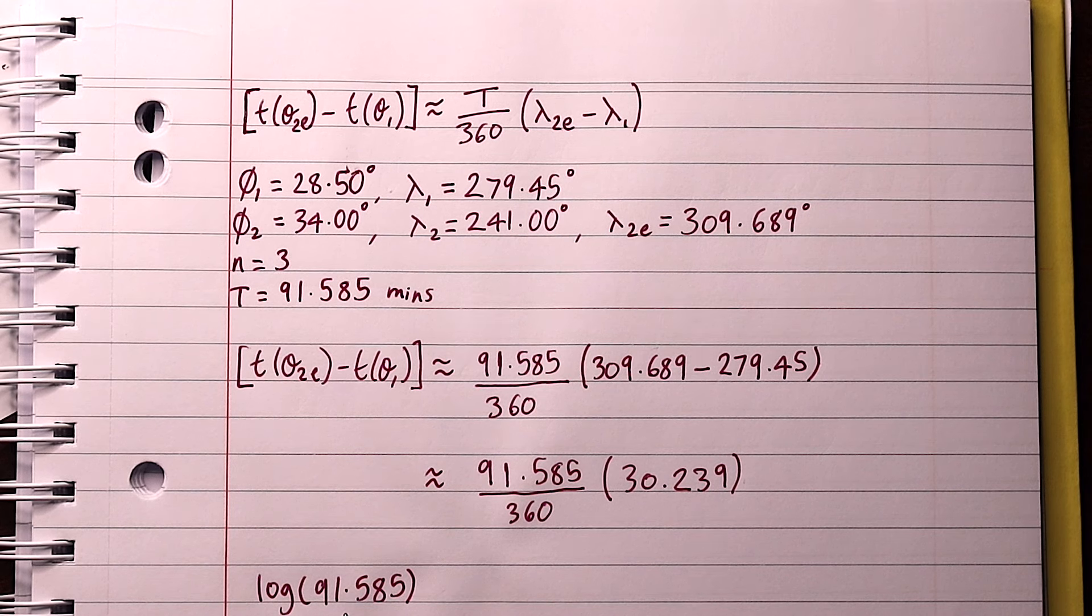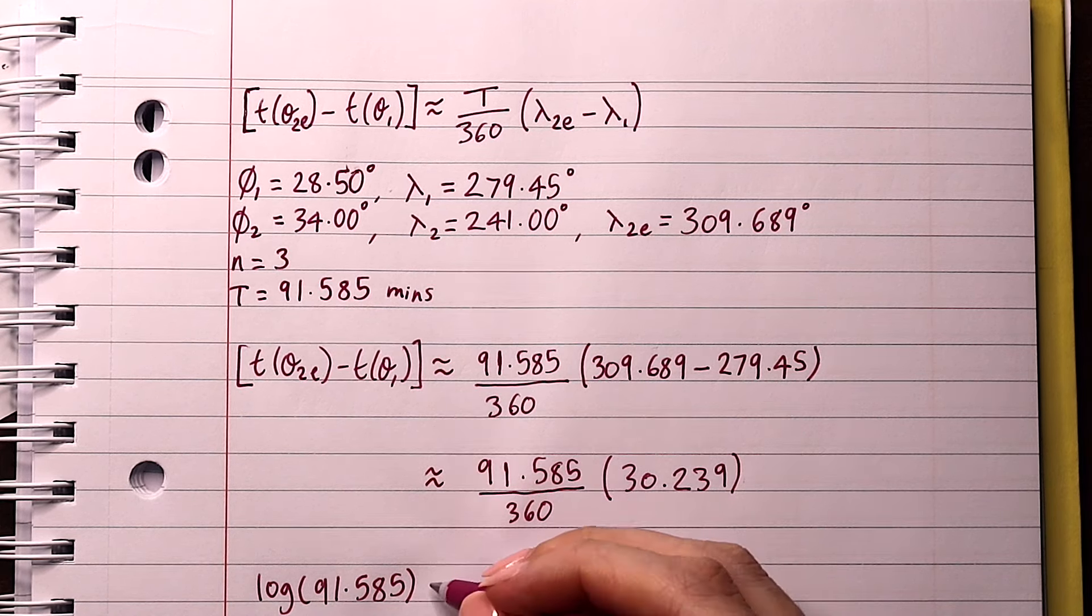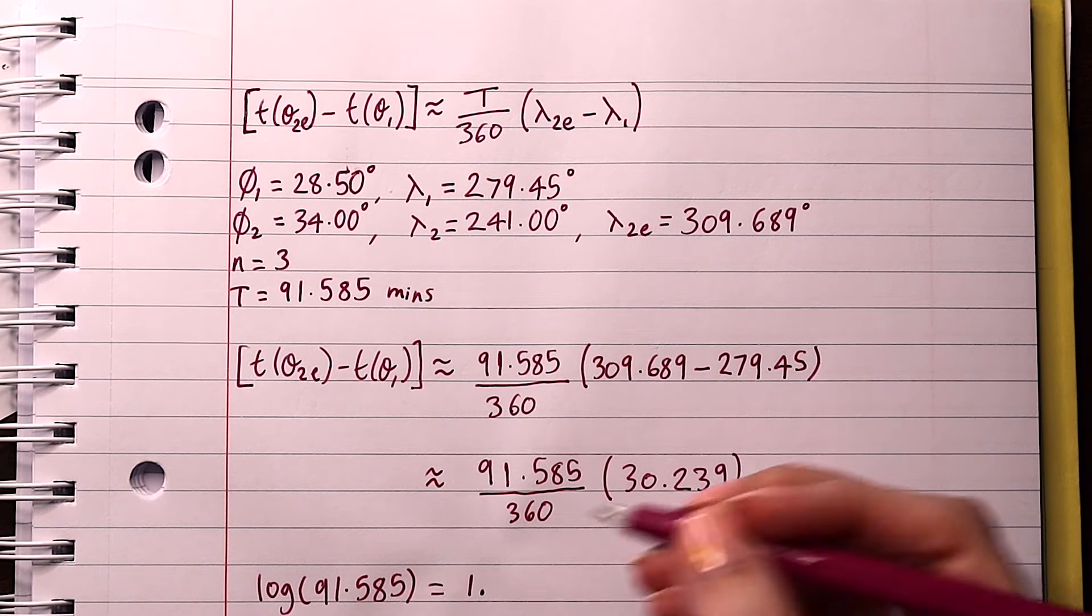First we want to find the log of 91.585. There are two significant figures before the decimal point, so we do two minus one is one, so our number is going to start with one point something.